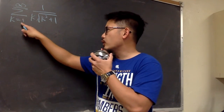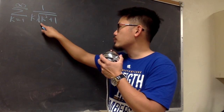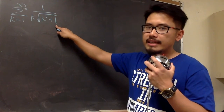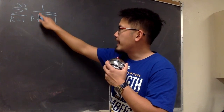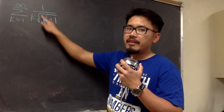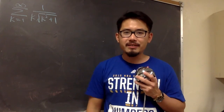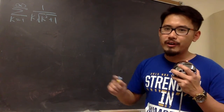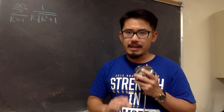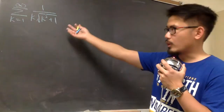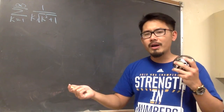Does this series converge or diverge? We have sigma, when k goes from 1 to infinity, of 1 over k times the square root of k squared plus 1. If we ignore the plus 1, the square root of k squared gives us a k, and this k multiplied with the outer k gives us k squared in the denominator. We know sigma 1 over k squared converges, so we can use a comparison test.